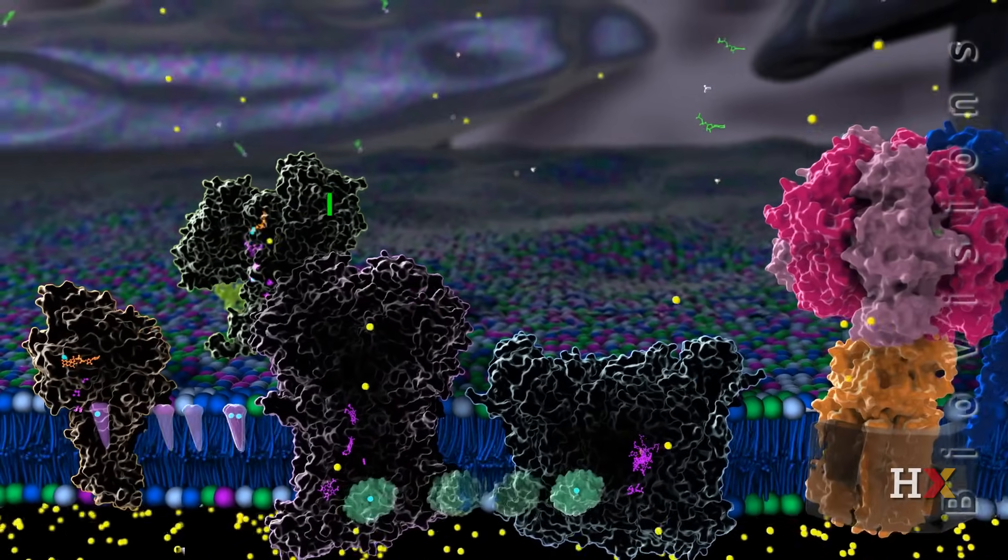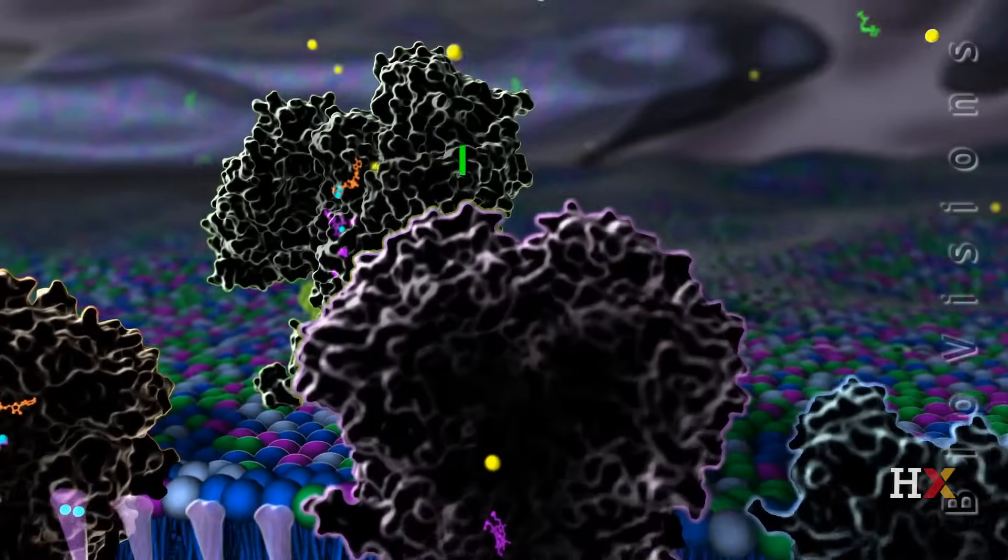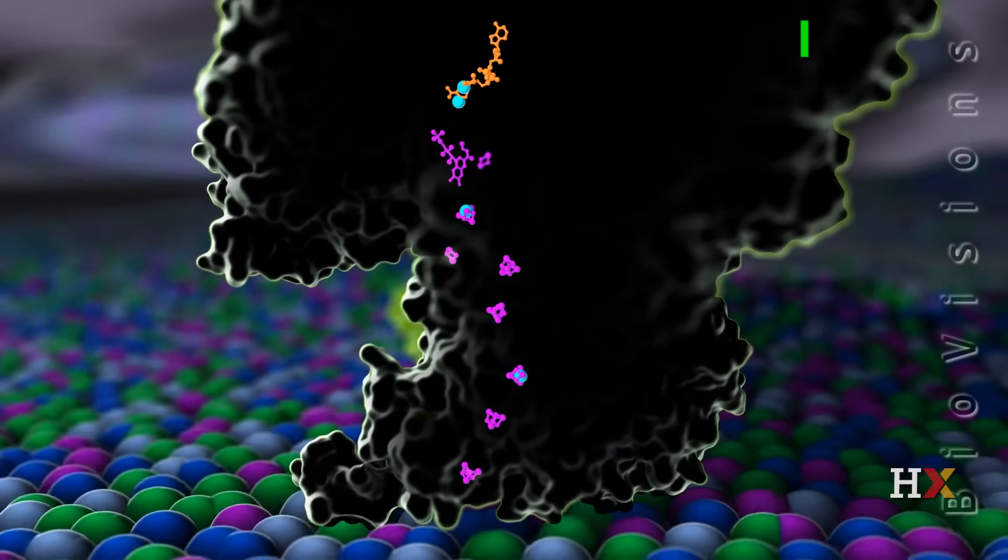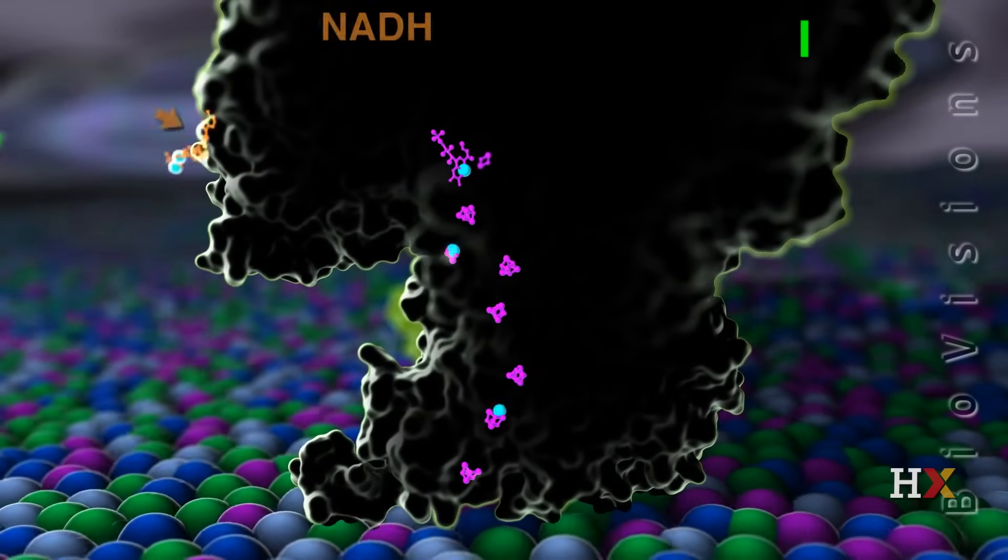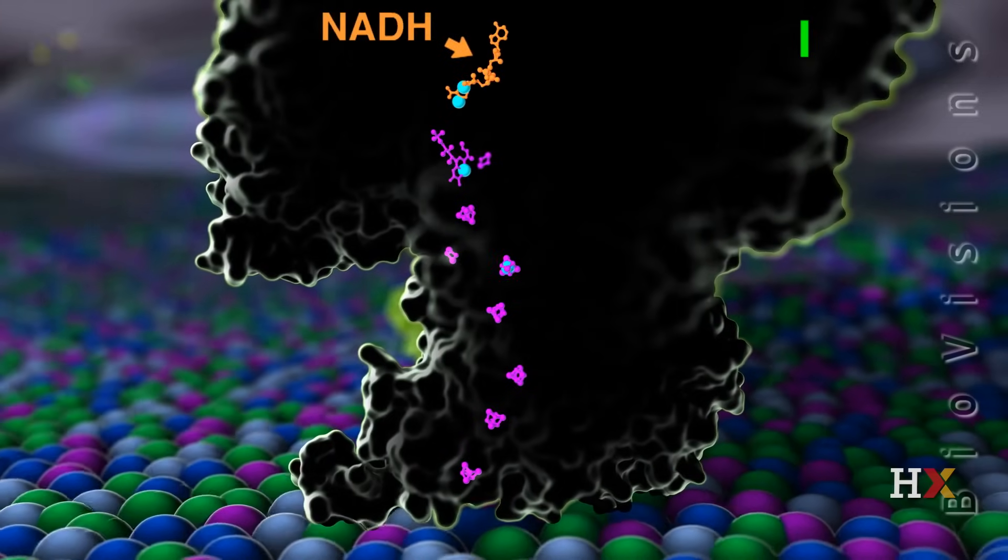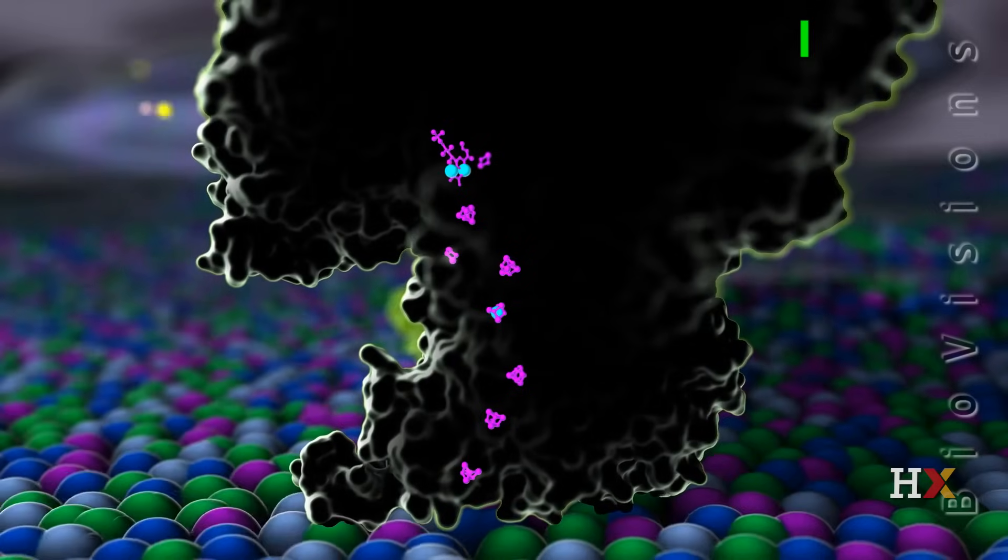Let's focus on complex one. A byproduct of sugar metabolism called NADH deposits two high energy electrons in complex one, where they are passed along a chain of redox centers.